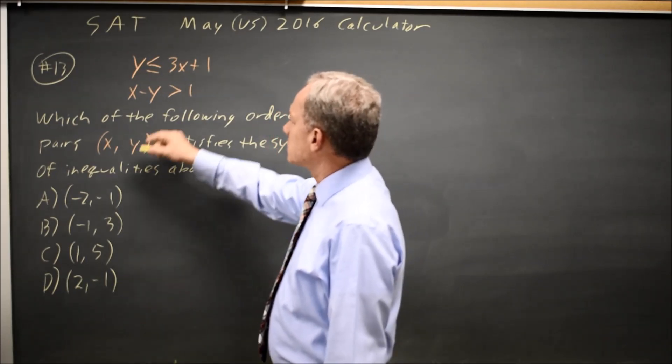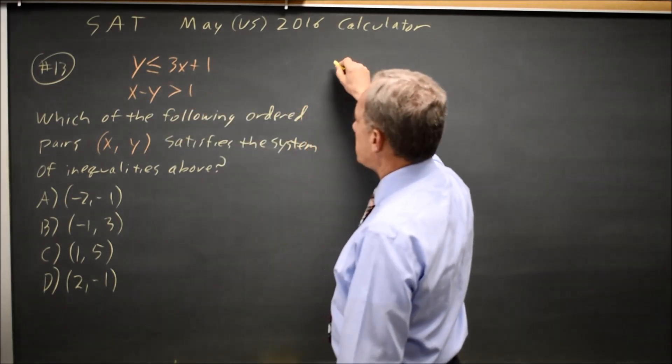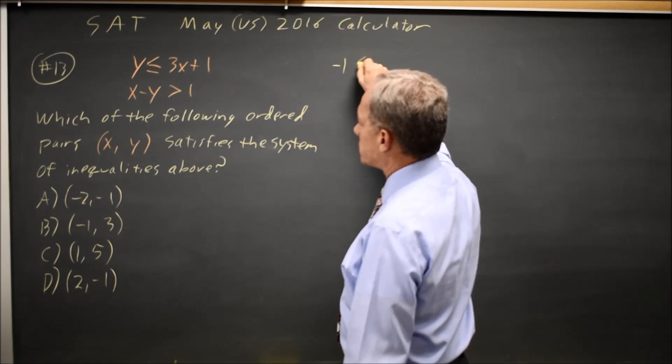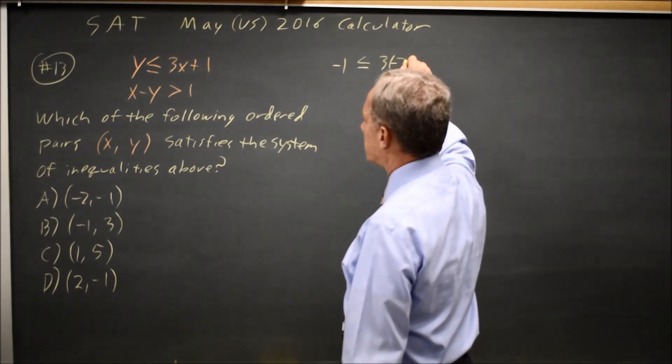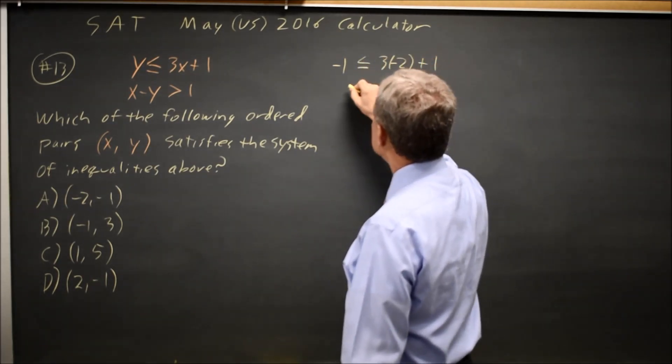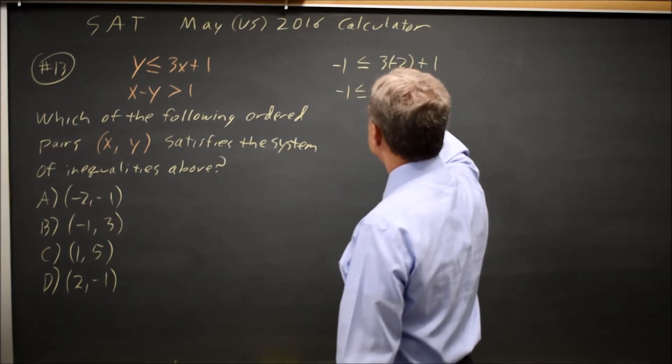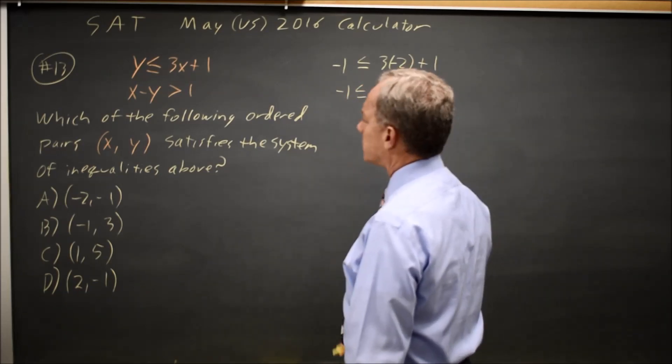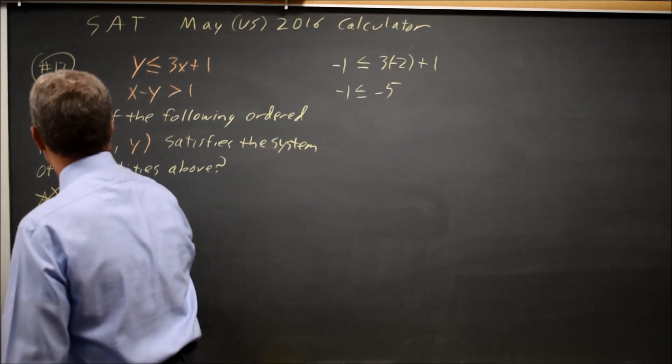Let's just substitute in the choices. So choice A, the Y value is negative 1, that's supposed to be less than or equal to 3 times negative 2 plus 1, so negative 1 less than or equal to negative 6 plus 1 is negative 5. That's not true. So choice A is wrong.